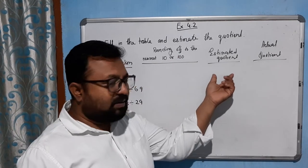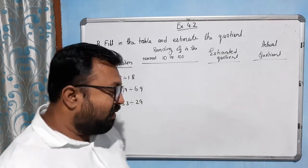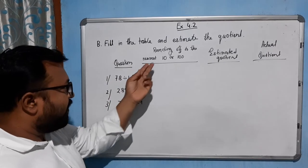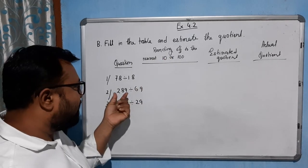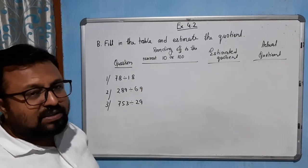We need to find the estimated quotient and the actual quotient. All two-digit numbers will be rounded to nearest 10, and three-digit numbers will be rounded to nearest 100.